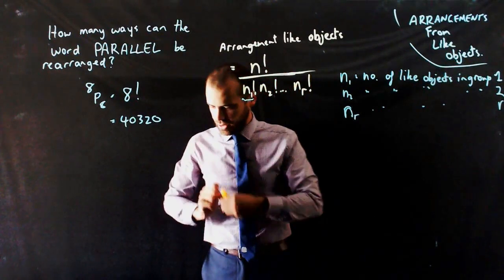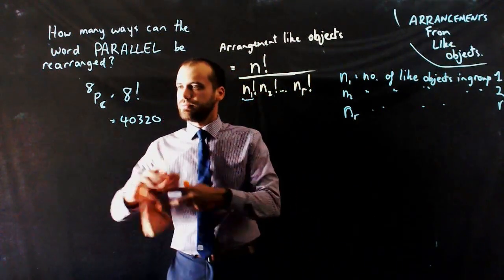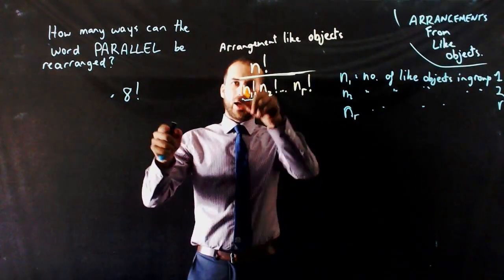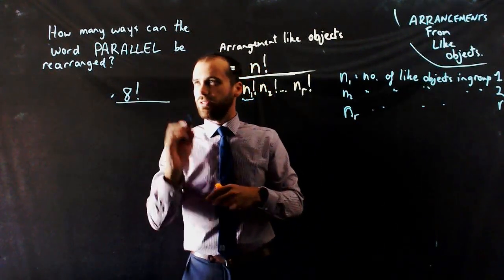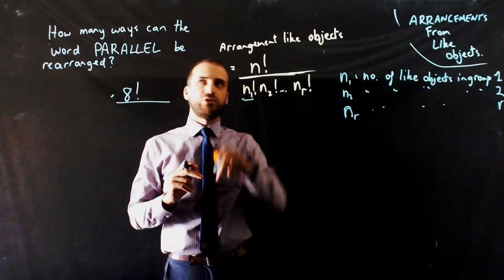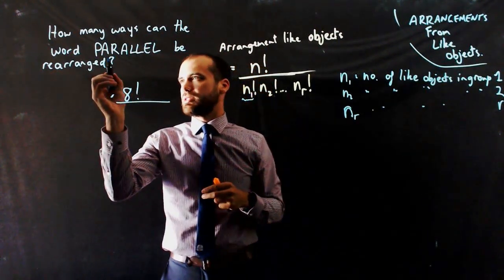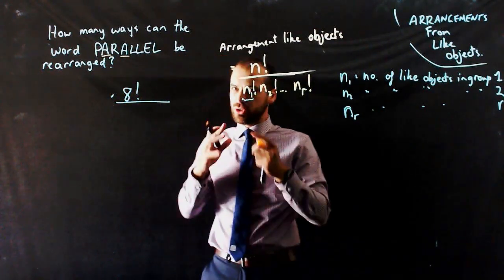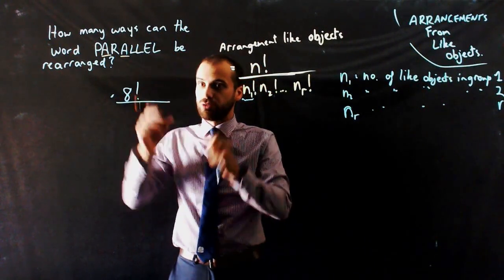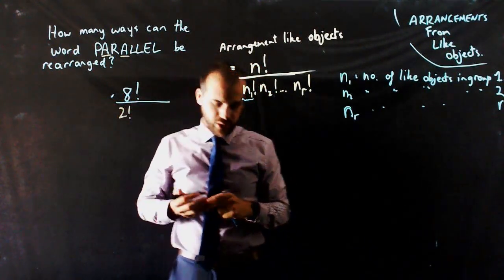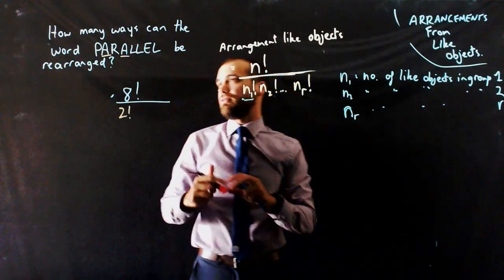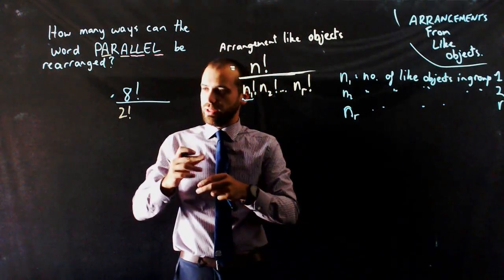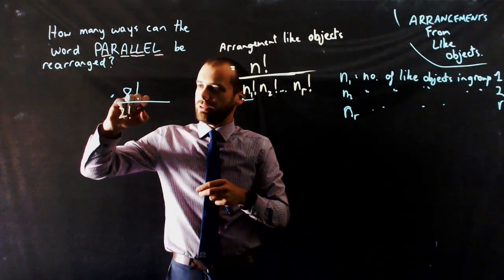So in this particular question now, it's actually going to be equal to 8 factorial over the number of like objects in group 1. So group 1, I'm going to say, are my A's. There's two like objects there in the group of A's, so that's going to be 2 factorial. Now, I have three L's, and so I can say that there are three like objects in group L or group 2.